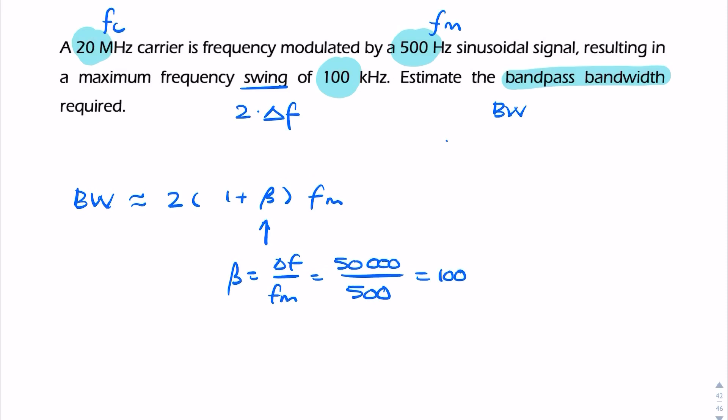So clearly we have wideband FM. So my bandwidth will be 2(101)(500), and that will give me 101 kilohertz.